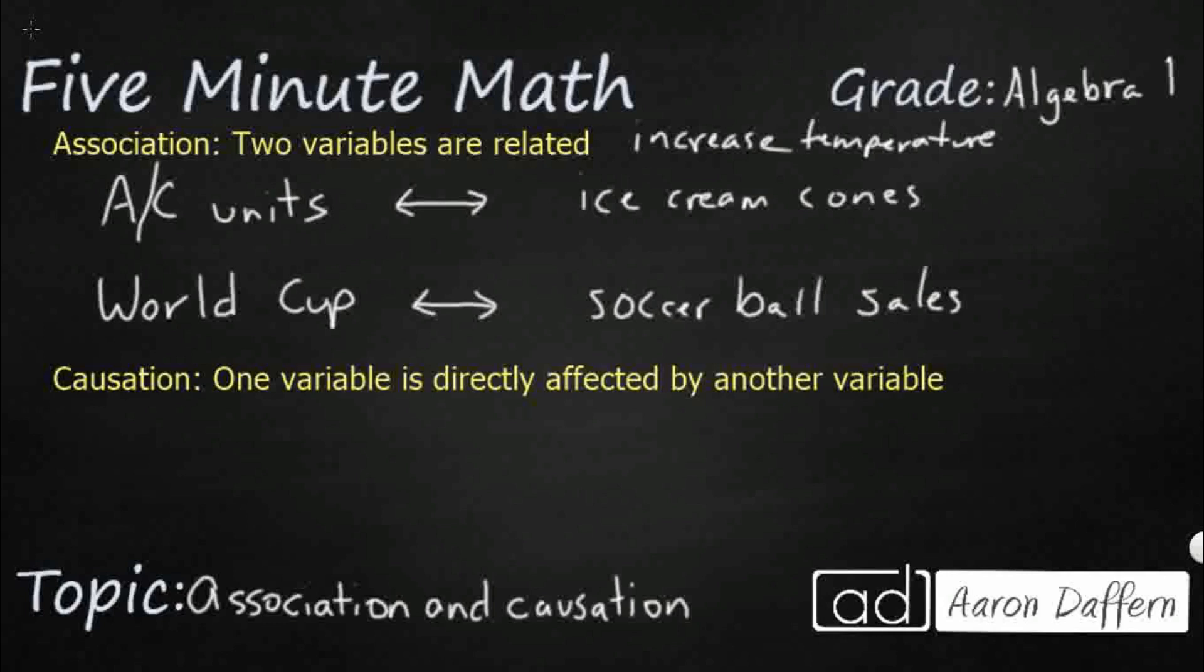So as you can tell, causation is much stronger. So causation not only includes association. So if you have two variables that have a causation, they not only include association, but it's stronger because one variable is directly affected by another variable. And both of these can either be positive or negative. In the two association examples, they're both a positive association. As one increases, so does the other, but sometimes they're negative. As one increases, the other decreases.